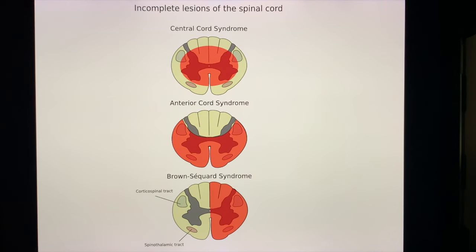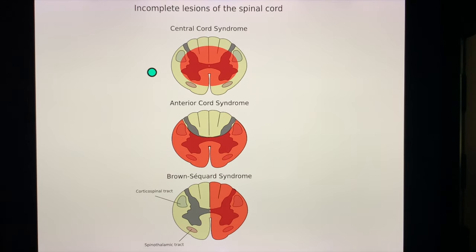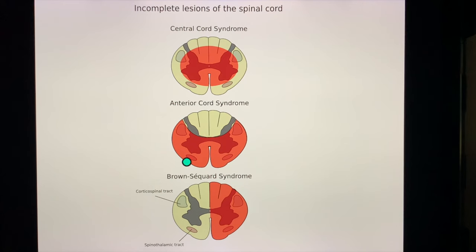Let us end with the correlative anatomy of the spinal cord syndromes. Here is an illustration showing three very commonly asked spinal cord syndromes in the exams: central cord syndrome, anterior cord syndrome, and Brown-Séquard syndrome. In central cord syndrome, the center of the spinal cord is affected. In anterior cord syndrome, as you can see with the shaded pink-orange, the area of the anterior spinal artery — the anterior two-thirds — is affected. In Brown-Séquard syndrome, it's a hemi-section of the cord, or half of the cord is affected.